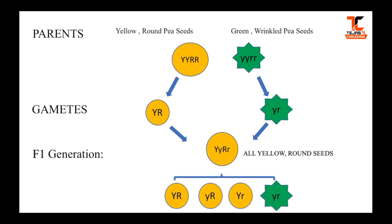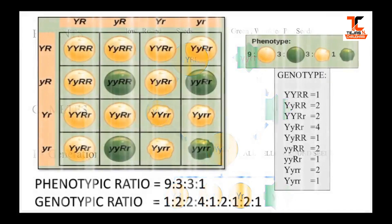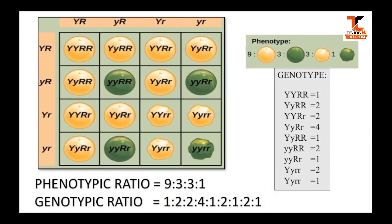In the F1 generation, all the plants had yellow-colored round-shaped seeds. But in the F2 generation, as you can see, 9 yellow round, 3 green round, 3 yellow wrinkled, and 1 green wrinkled plant were observed. Hence, the phenotypic ratio here will be 9:3:3:1.